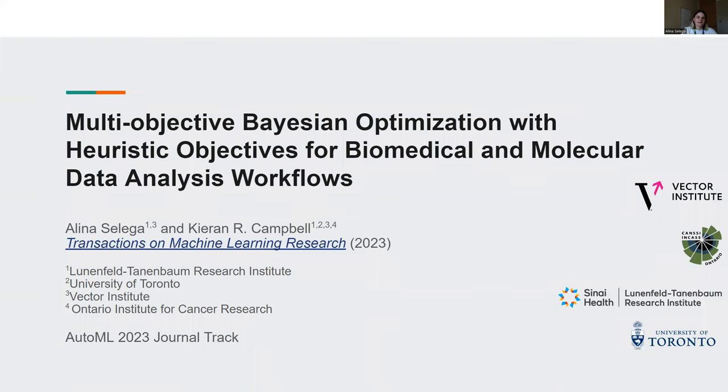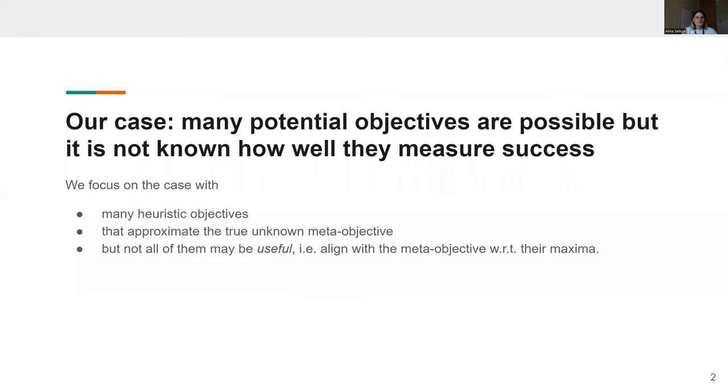Hi, my name is Alina Salaga, and I'm a postdoc at the Lunenfeld Tannenbaum Research Institute in Toronto. I'm going to talk about my recent work with Kieran Campbell that is presented in the AutoML journal track. We focus on the case where we have many heuristic objectives that approximate the true unknown meta-objective, but not all of them may be useful in terms of aligning with the meta-objective with respect to their maxima.